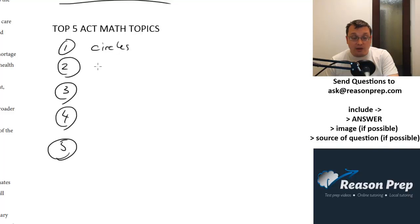So circles and triangles, absolutely important for ACT math. Area, perimeter, circumference, isosceles, equilateral, Pythagorean theorem, similar triangles, SOHCAHTOA trigonometry, all that stuff. Very important for ACT math.